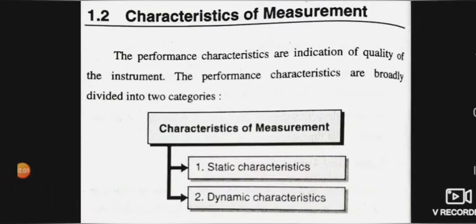Next we look at the characteristics of measurement — this is an important topic. The performance characteristics are the indication of the quality of the instrument. Performance characteristics are broadly divided into two categories: static characteristics and dynamic characteristics. We will cover both today.